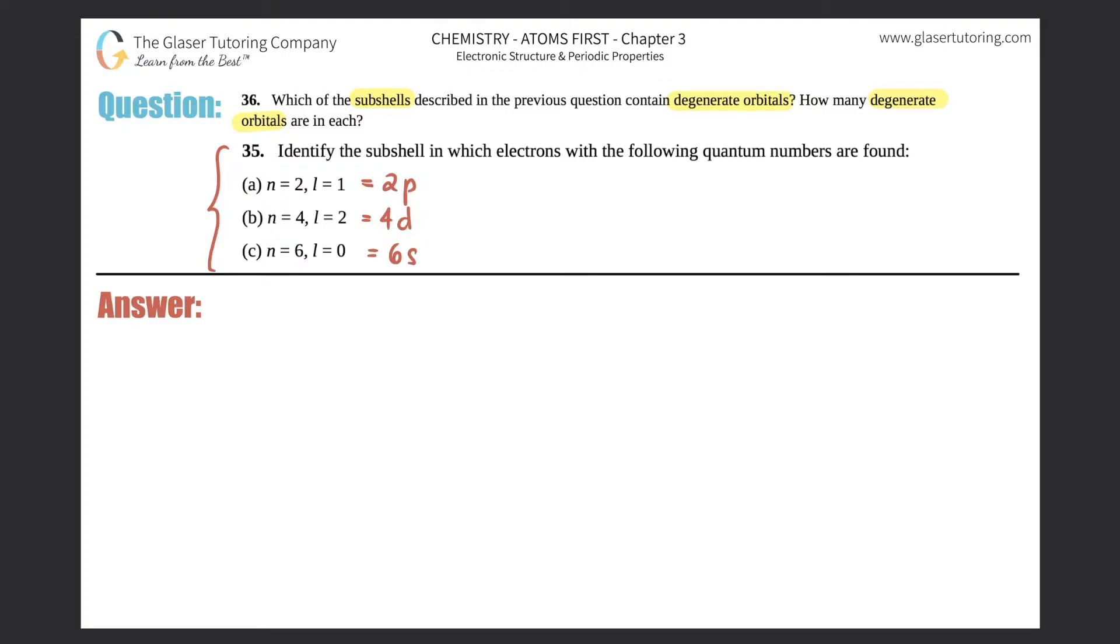Now we just have to find out which ones contain degenerate orbitals. The word degenerate in the chemistry sense means that the orbitals have the same energy amount. So orbitals have same energy. There could be many different orbitals that have the same exact energy level and the same amount of energy in which the electrons are stored.